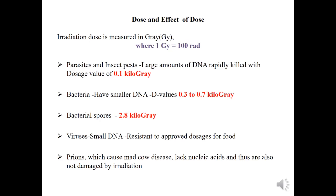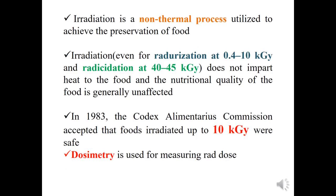Prions, which can cause mad cow disease, also lack nucleic acid and are not damaged by irradiation. Viruses and prions are not denatured by irradiation technology, while bacterial spores are killed by irradiation technology using 2.8 kilogray.